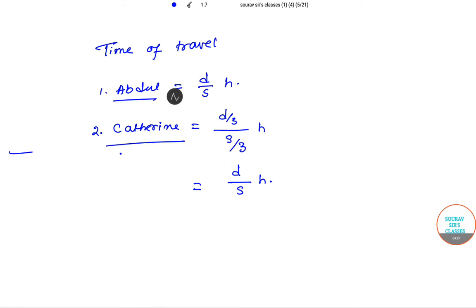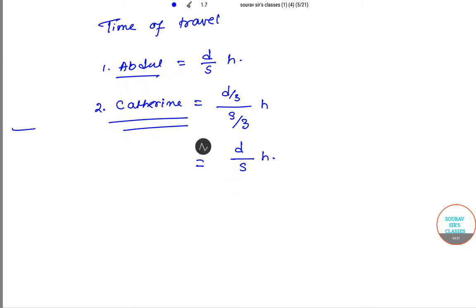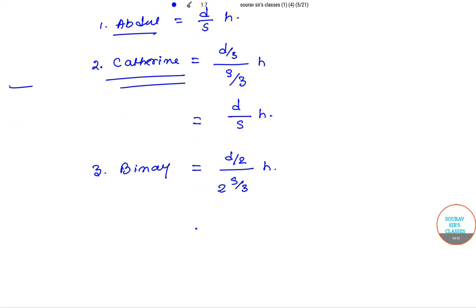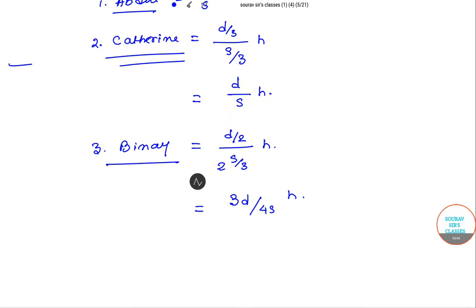Now the last one was Binoy, so Binoy's time of travel is d/2 divided by 2s/3 hours, and then if we simplify it we will get 3d/4s, right? This will be Binoy's time of travel.